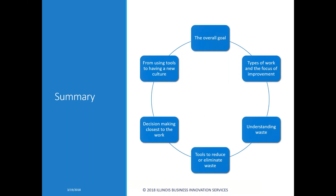The overall goal is improvement, cost reduction, and a focus on cost. The type of work we focus on is waste because there is much more waste than value-added work — statistically not only is there more, but it's more frustrating for people. We have to understand what waste is and be able to identify the tools that help us eliminate it. The people who are going to do the improvements are the ones closest to the work — we need to learn to engage them, involve them, and if they don't know how, teach them. We go from using tools to having an entire culture that supports continuous improvement.